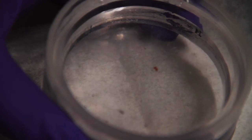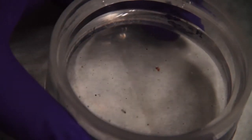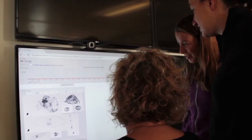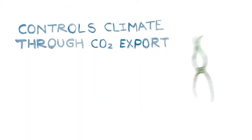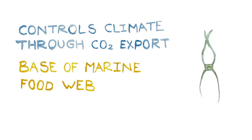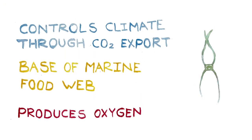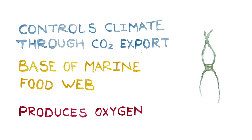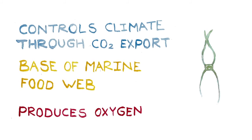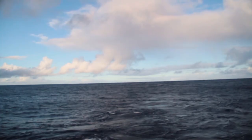Phytoplankton is crucial for life on Earth. There are three different aspects: it controls our climate, it gives us food, and it gives us oxygen to breathe. So it's really, really important for life on Earth.